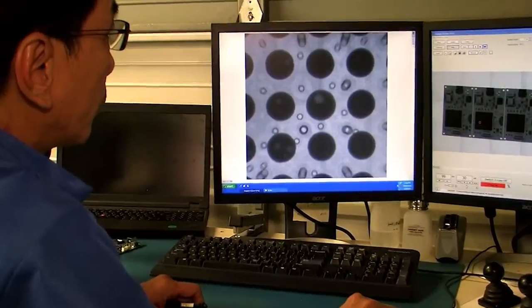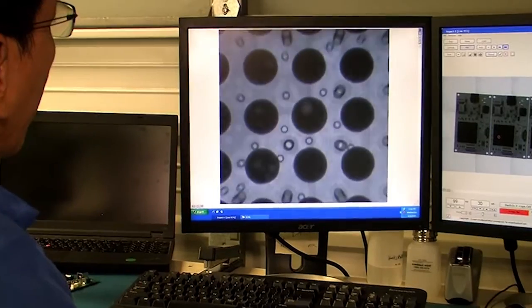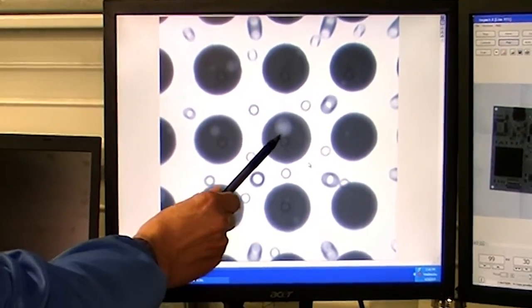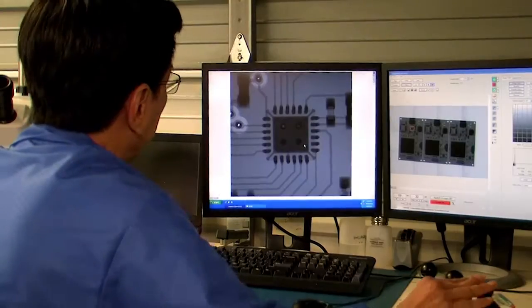For this reason, standard procedure at Advanced Assembly is to always check the first board, then adjust the process to run boards at the proper speed.